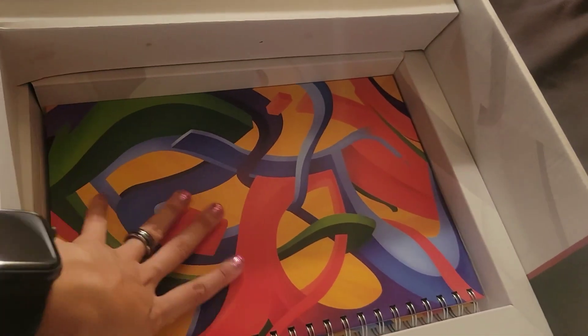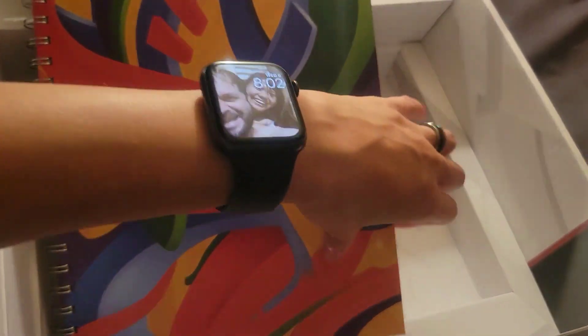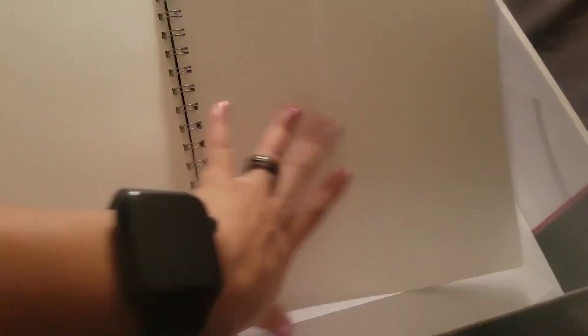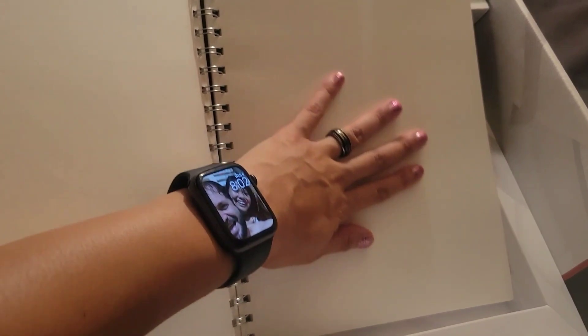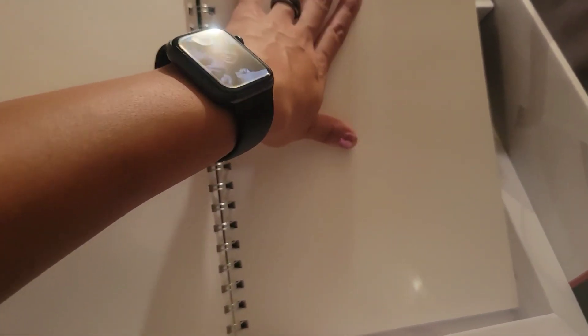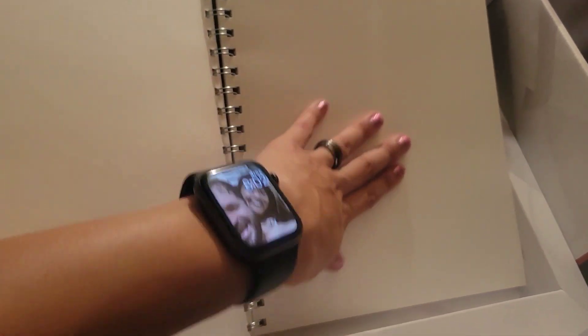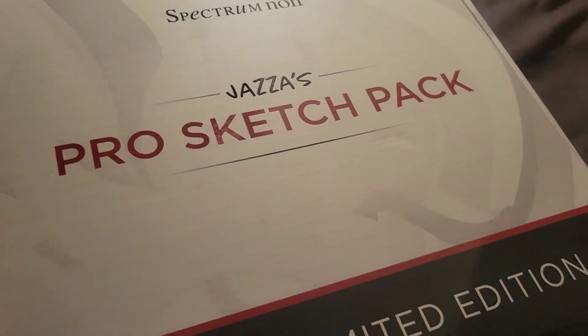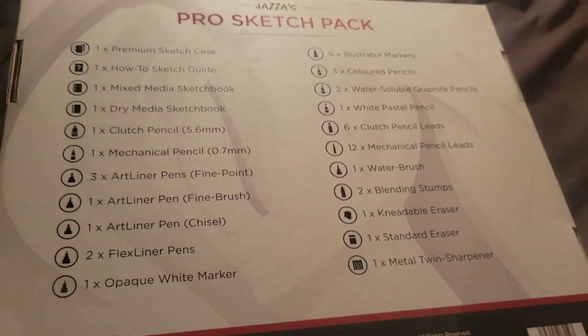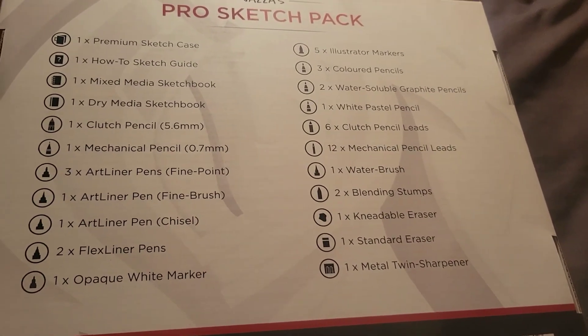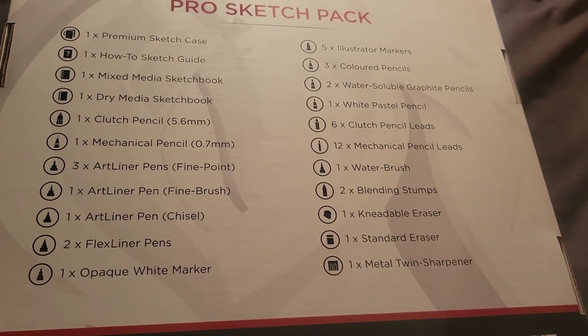And this is the mixed media book sketchbook. Oh yeah, this is more textured, it's not quite like watercolor paper but it is more textured than the dry media sketchbook. Alright. Oh and it has a list of everything that's in the box on the back. I should've probably showed you guys that in the first place, but here you go.